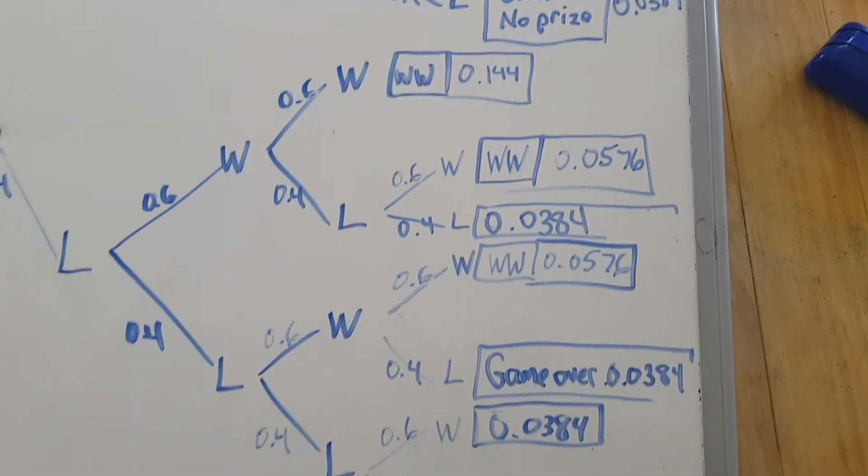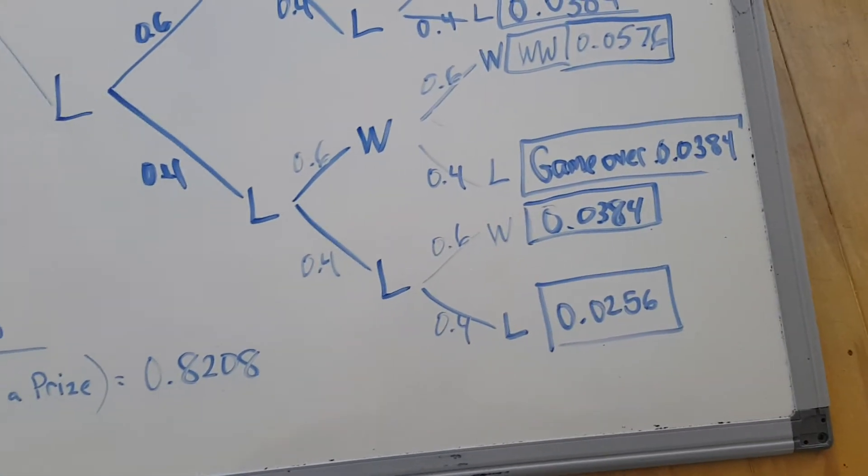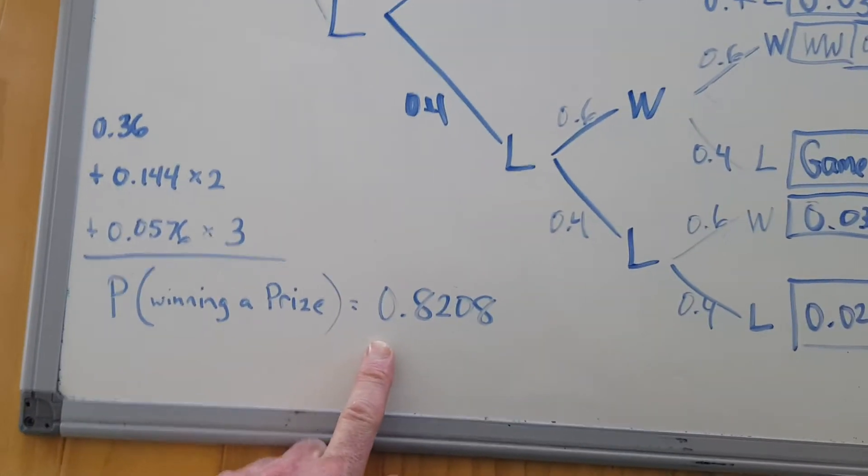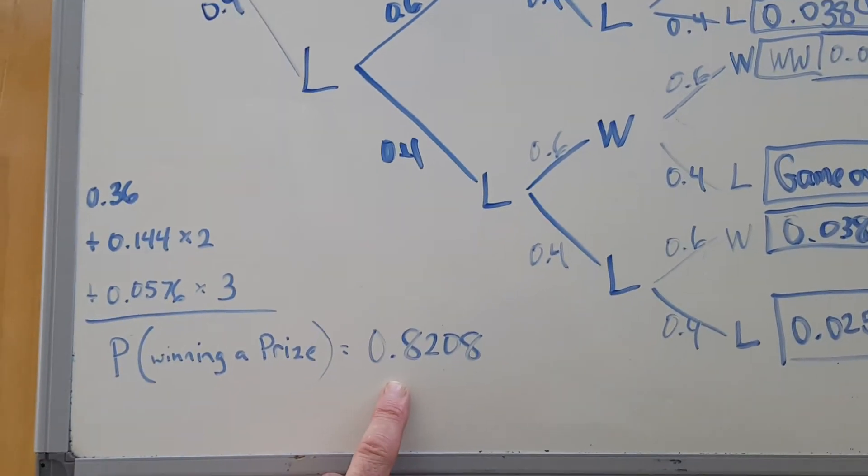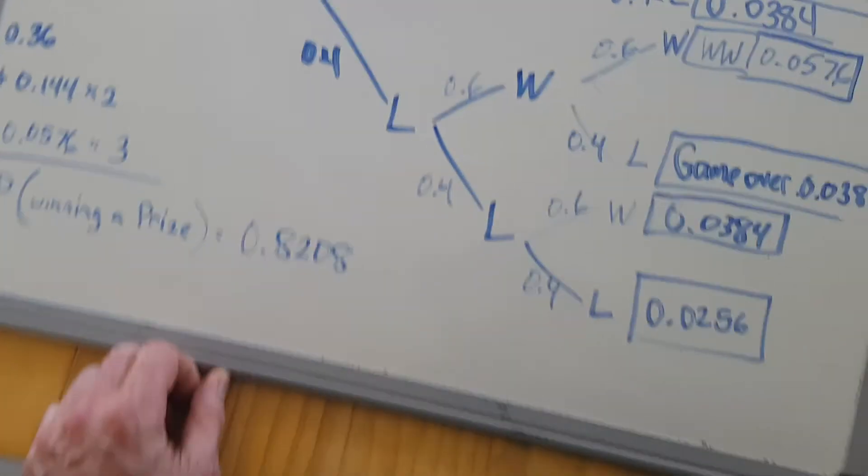And this video is also, there's a still photo that I've put to our classroom page. Anyway, the probability of winning a prize, 0.8208. It's a very good game to play. Probability is way over a half.